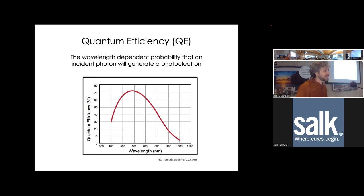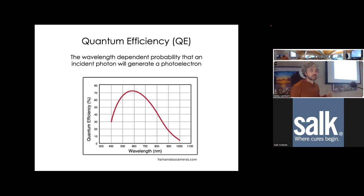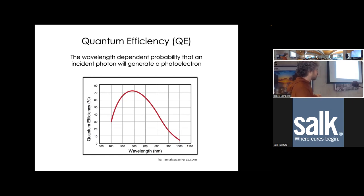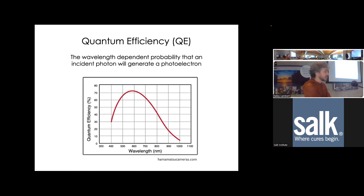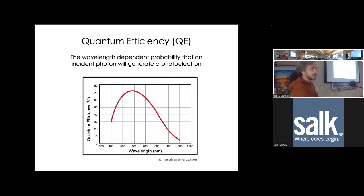There is a metric called quantum efficiency that is super important for any detector. It is the wavelength-dependent probability that an incident photon hitting that photosensitive material will actually generate an electron. Sometimes it will just pass through and not interact, or it'll get absorbed but dissipate as heat and not liberate an electron. This camera from Hamamatsu shows about 70-72% probability if you shine 580 nanometer light. However, if you shine far red light, 90% of the time it's not going to register.